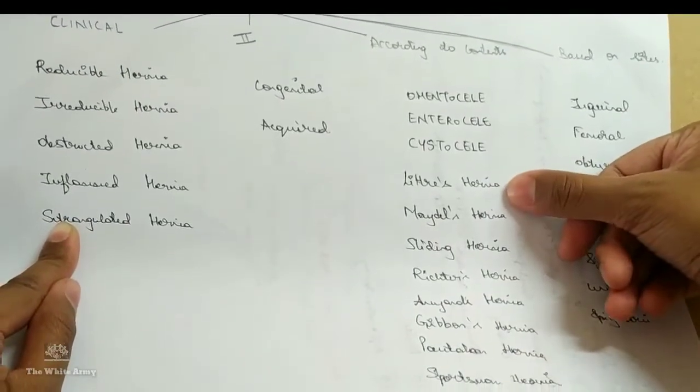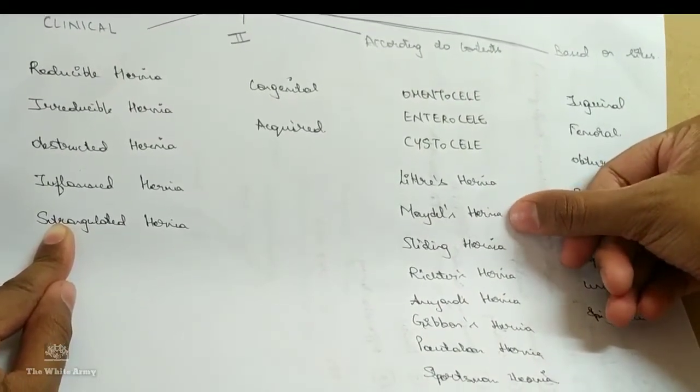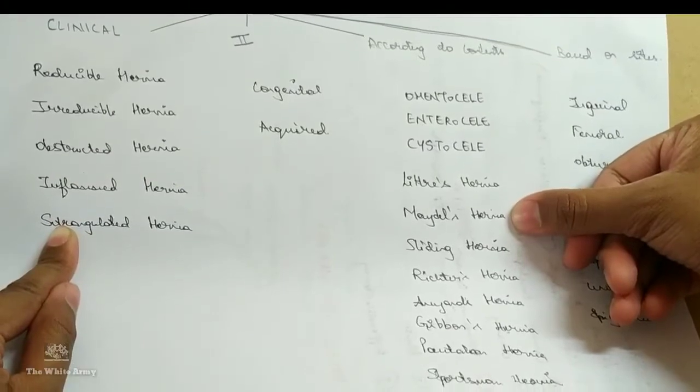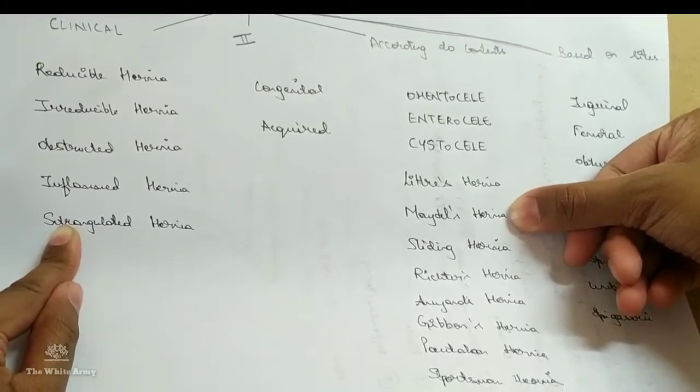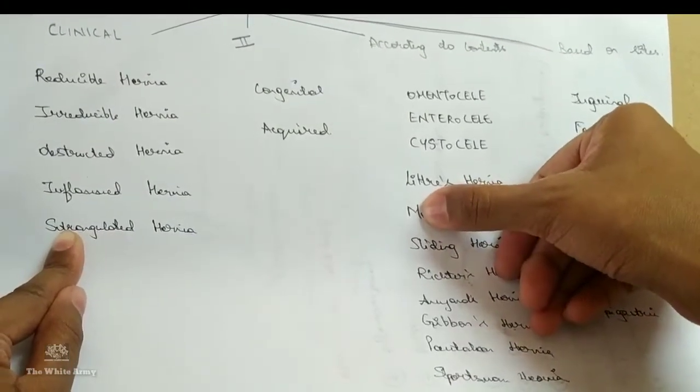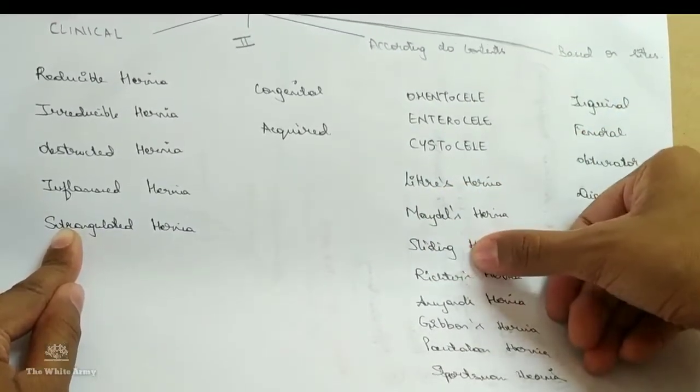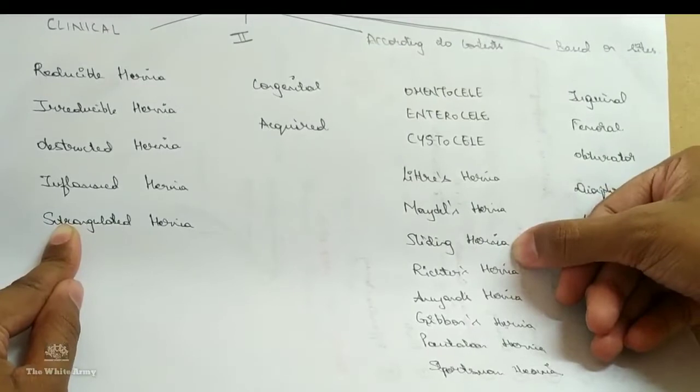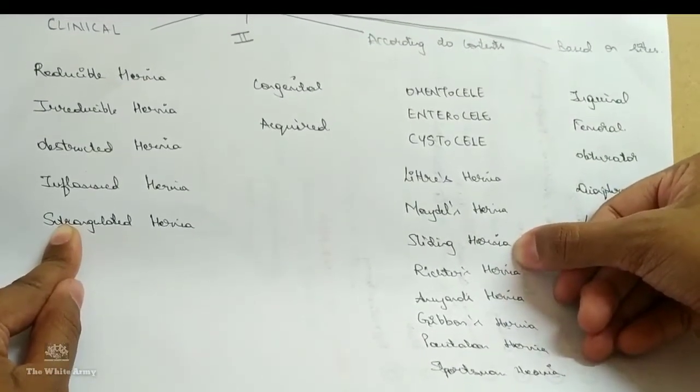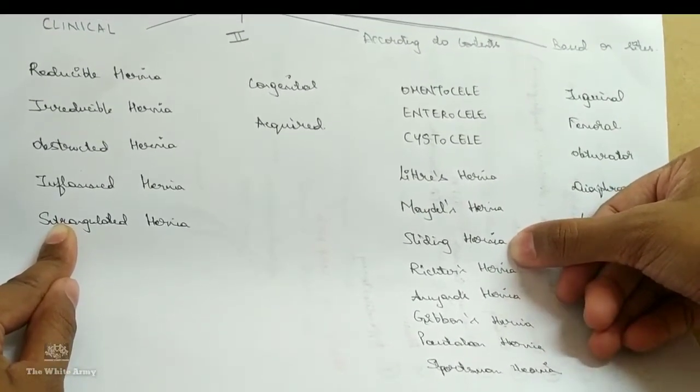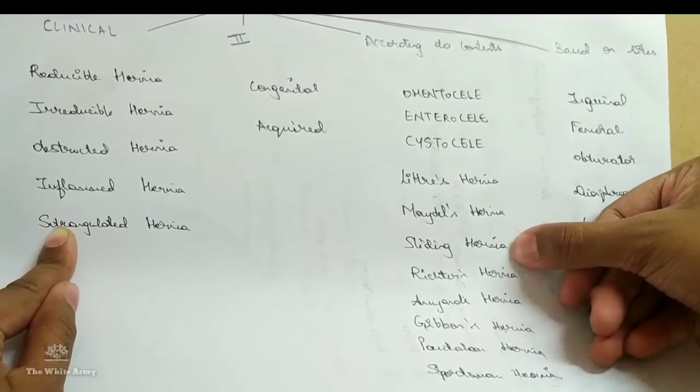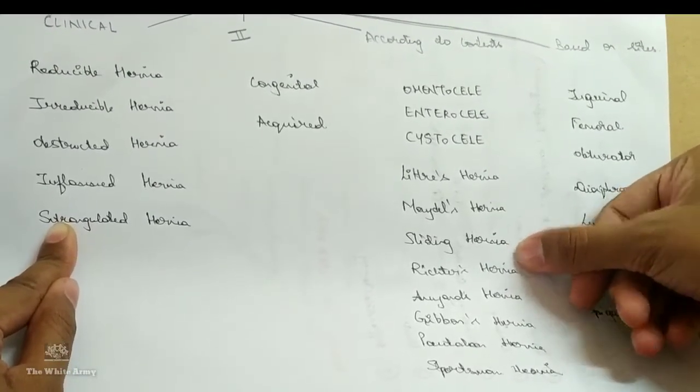Littré's hernia which includes Meckel's diverticulum as a content. Maydl's hernia where the intestinal loop is in the W shape, you can remember it as M when made in opposite direction appears like W. Sliding hernia where posterior wall is also the content like intestine or a bladder, very most common in left side with sigmoid colon in the posterior wall.